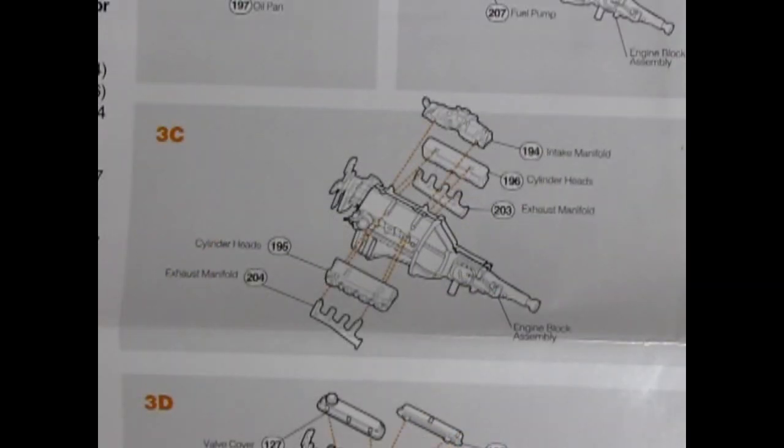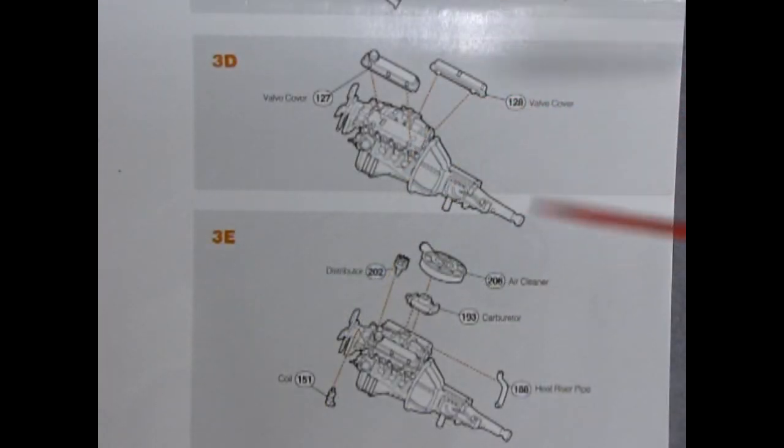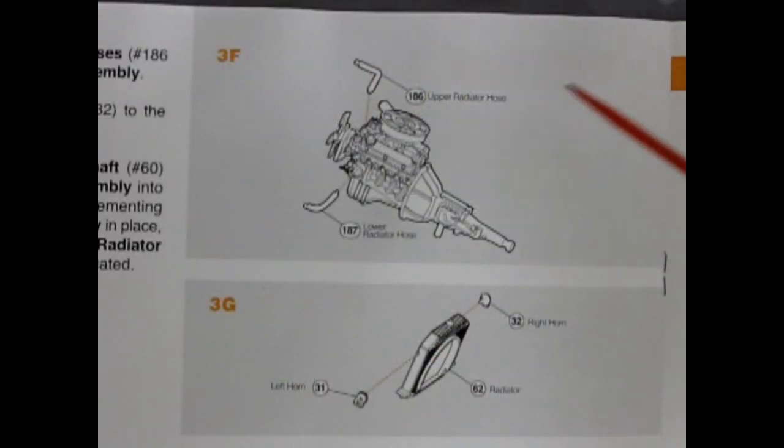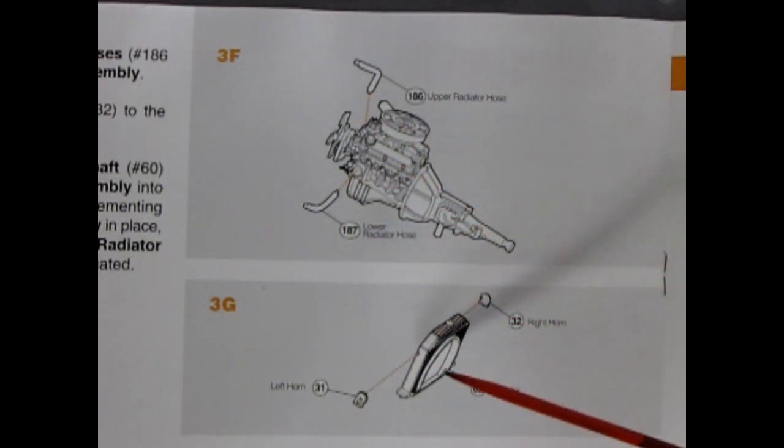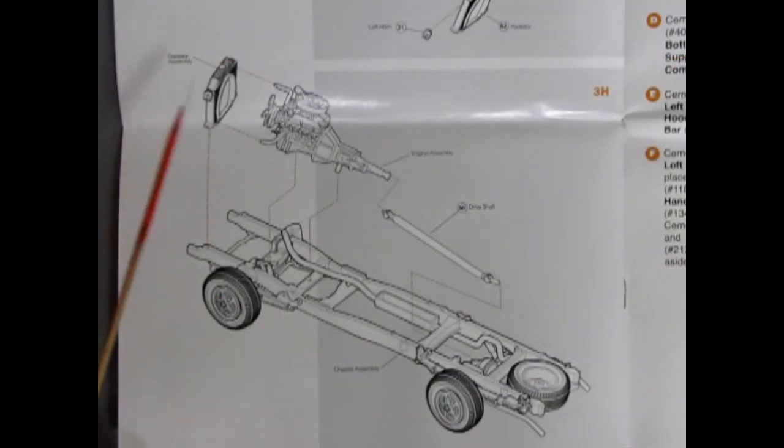We continue our engine assembly with our intake manifolds, cylinder heads and exhaust manifolds all gluing onto our assembled engine followed by our valve covers, air cleaner, carburetor distributor, coil and heat riser pipe. What engine wouldn't be complete without the upper radiator hose and lower radiator hose and down here we get to glue our horns onto our radiator. The radiator, the completed engine and the drive shaft all hook up along the frame into the rear differential to complete the unit.